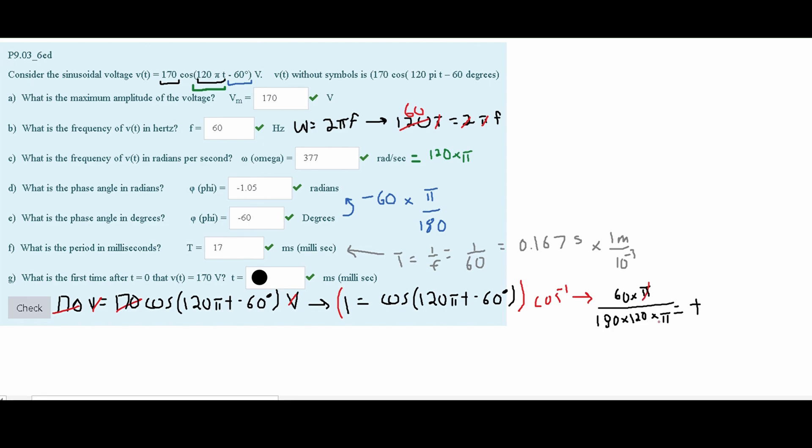Now, seeing this, we can cancel out the π's. We can cancel out this 60 with this 120. We're going to get a 1 over 2. So our T is going to be equal to 1 divided by 180 times 2, or that our T is equal to approximately 0.0028.